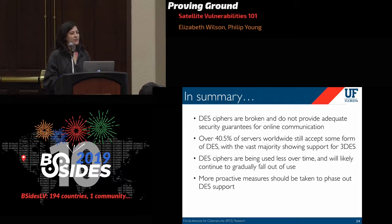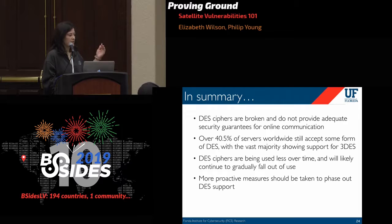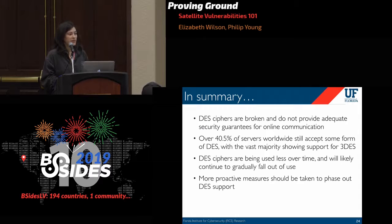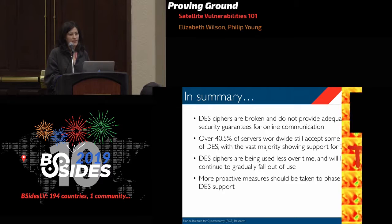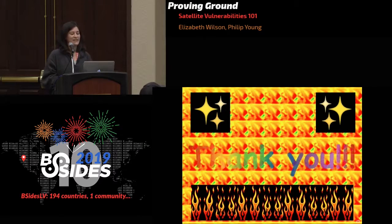To summarize: DES ciphers are broken — they've been broken and don't provide adequate security guarantees for online communication anymore. Over 40% of servers worldwide still support some form of DES cipher, with Triple DES being the vastly most supported. DES ciphers are being used less over time, which is good, and we can expect to see a long tail as they gradually fall out of support. We can take more proactive measures to phase out DES support completely, otherwise we risk being haunted by our past.